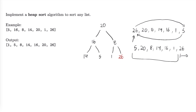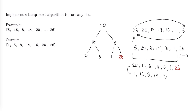Our list at this point before we sift down any further is going to be 20, 16, 8, 14, 5, 1, and 26. So now we swap 20 and 1, and our resulting list is going to be 1, 16, 8, 14, 5, 20, and 26.